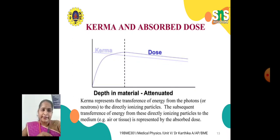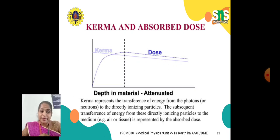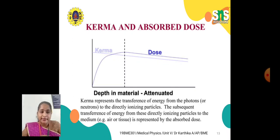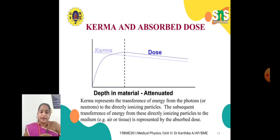How do we relate Kerma and absorbed dose? The graph shows dose versus depth in a material or attenuator. Kerma represents the transference of energy from photons or neutrons to directly ionizing particles, and the subsequent transference of energy from these directly ionizing particles to the medium — such as tissue — is represented by the absorbed dose.